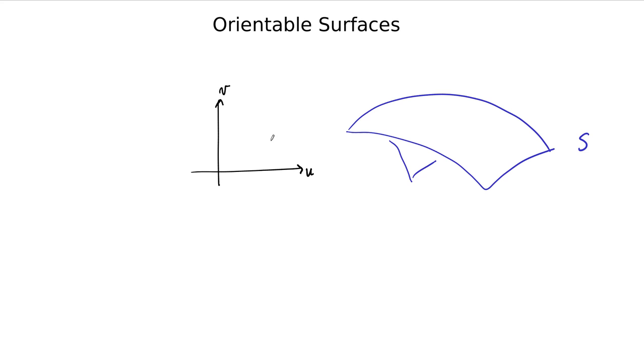That normal vector is somehow related to a parameterization of the surface. If we have some parameter domain UV, and we have our vector function R, which assigns points in the parameter domain to points on the surface, then at every point, say here in the domain, corresponds to a point on the surface.